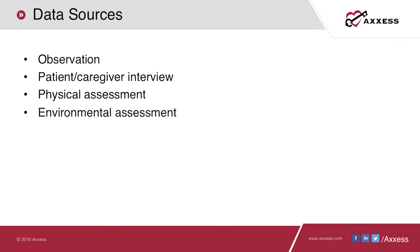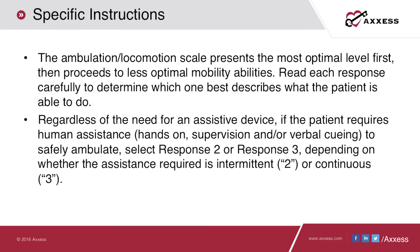You should assess the patient's environment and observe for barriers that impede safe ambulation — barriers could include throw rugs. The answers are arranged in the most optimal level starting with number one and then declining from there. It is important to read each answer carefully to understand which answer is appropriate for your patient. You should select response number one if the patient requires any one-handed device such as a cane or a single crutch.